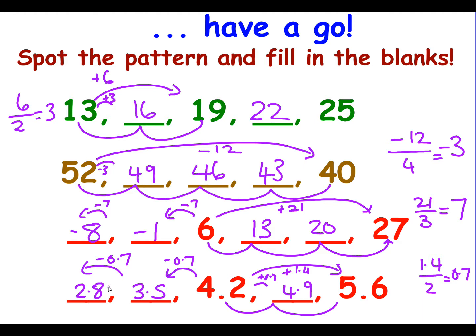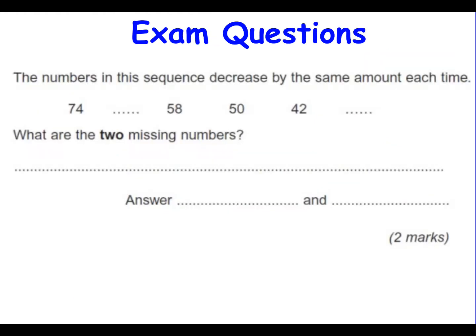How did you do on those? Let's look at a couple of exam questions and see how you get on. So these numbers are in a sequence and they decrease by the same amount each time. What are the two missing numbers? So here we have a rule that says take away 8. So in order to complete the sequence, we need to take away 8 from 42. We end up with 34. Now, as we said before, because we're going in the opposite direction, the subtract becomes a plus. So we need to add 8 here. So 58 plus 8 is 66. So the 2 missing numbers are 66 and 34. And that's worth 2 marks.